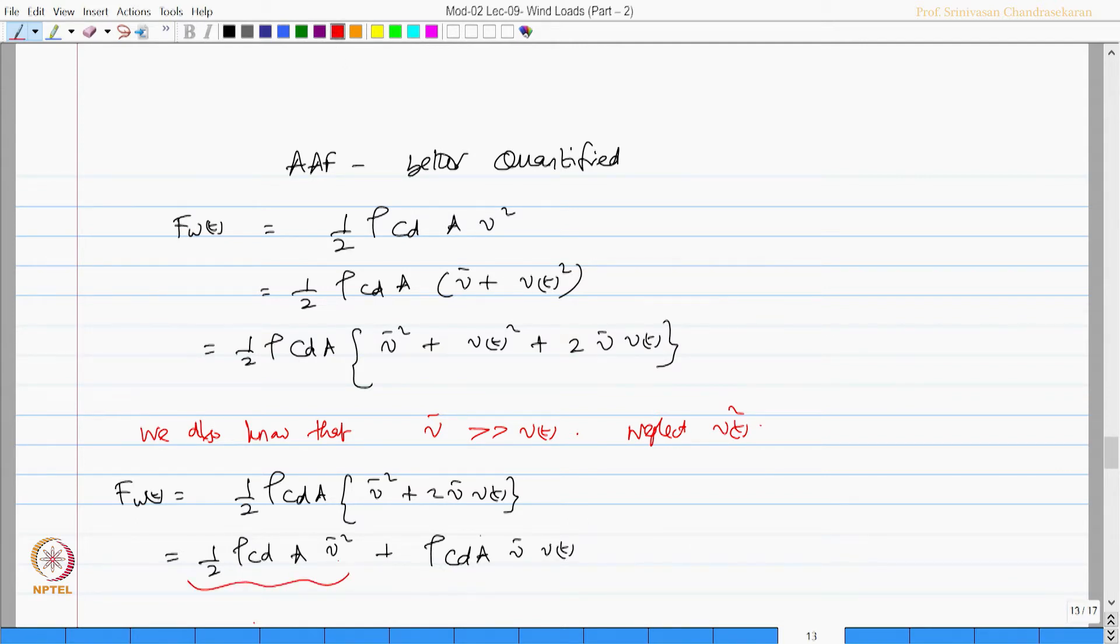We call this component as steady mean drag force. This can be expressed as steady drag component mean component plus rho CD A V bar V of t. We call this as F g of t. G stands for gust.